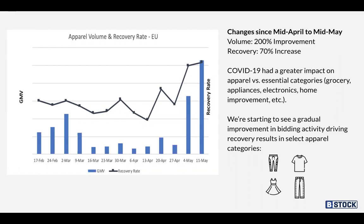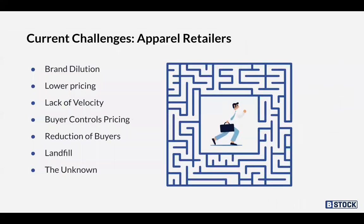When we talk to our retailers, we discuss the challenges they might face when entering a B2B marketplace. The three key areas I tend to come across when talking to potential sellers are brand dilution, velocity, and reduction of buyers. Brand dilution is really important — we're keen to ensure your brand is protected while still achieving velocity.